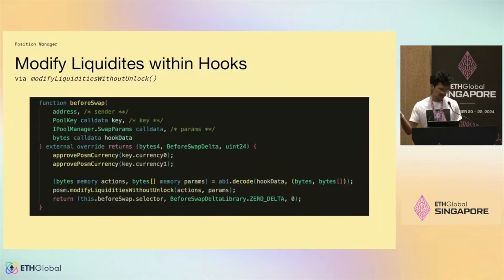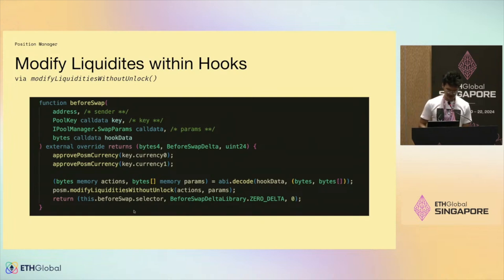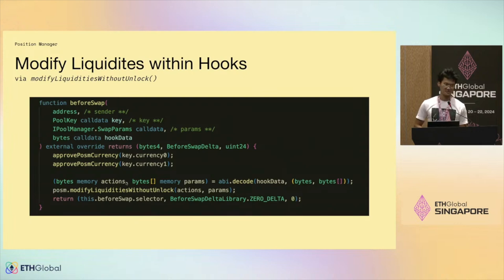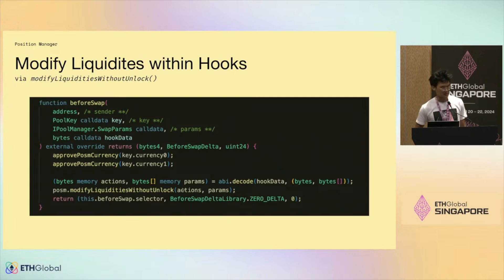This is kind of what it looks like in a hook — this is the before-swap. You can see there are some approvals happening, and you can imagine a sequence of encoded actions where the hook has access to this function. This function call will then modify the underlying position.